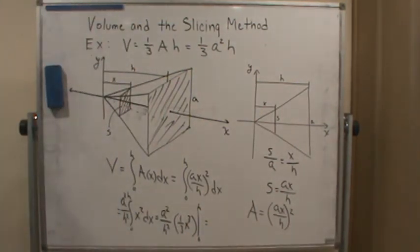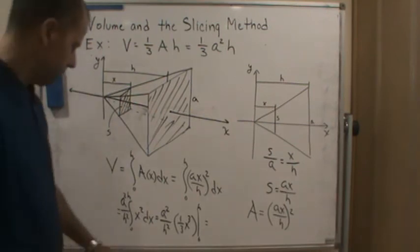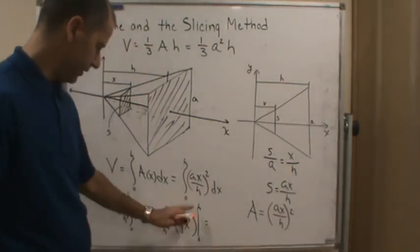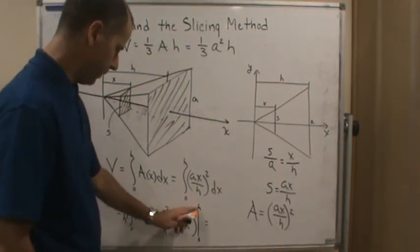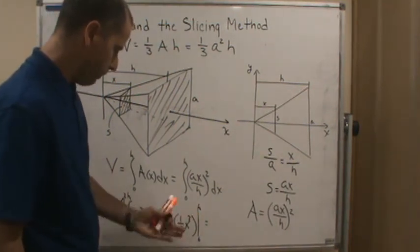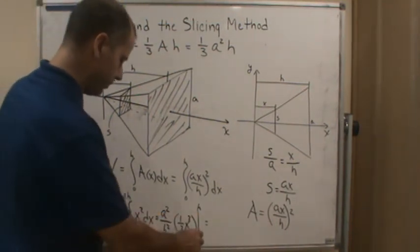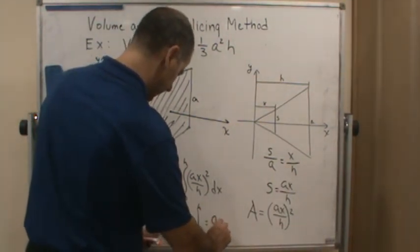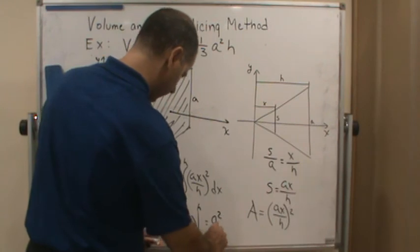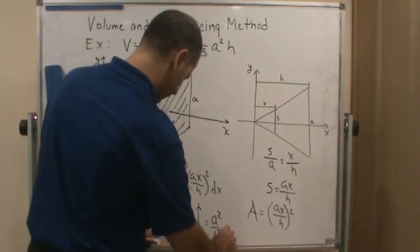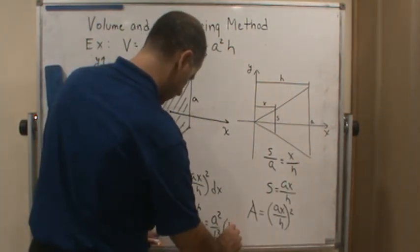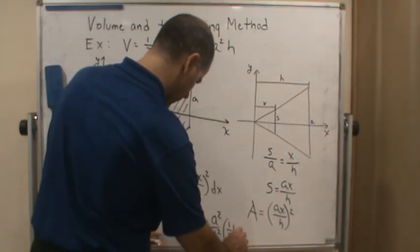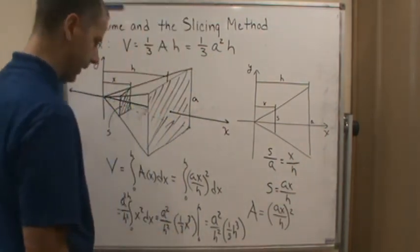And of course, at 0, this is going to be 0. This whole thing is going to be 0. So we can ignore that. So it's going to end up being evaluated at h minus 0. So if we do that, it's going to end up being a squared over h squared times one-third h cubed.